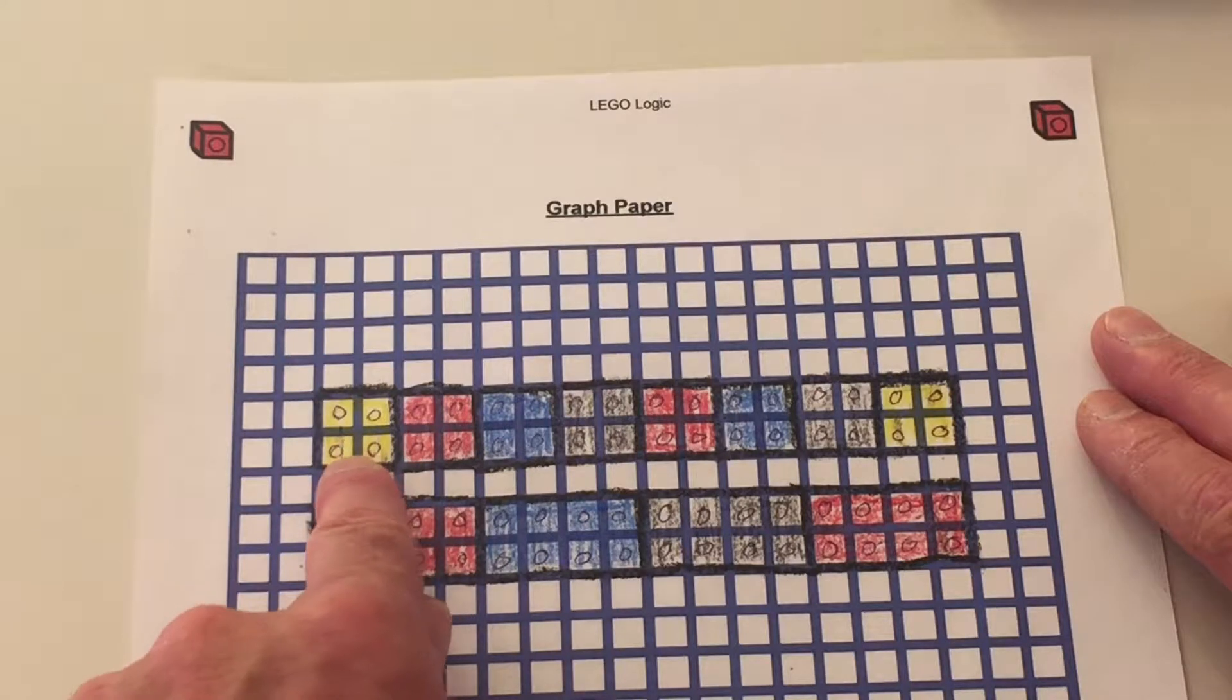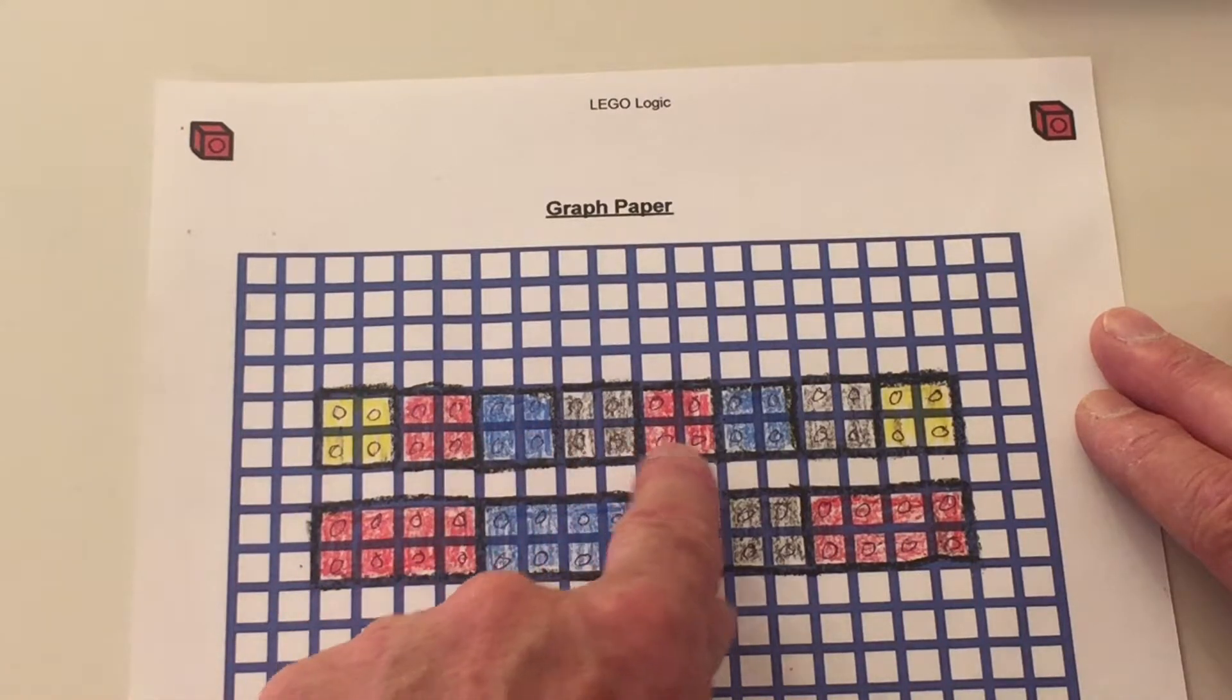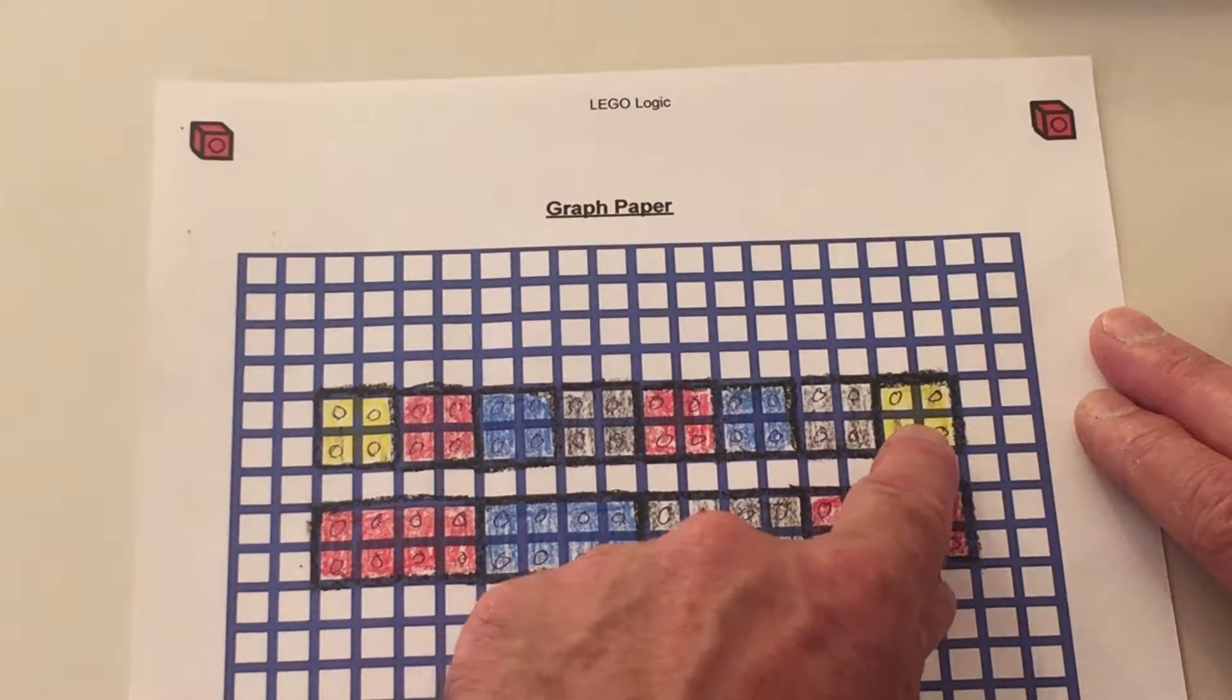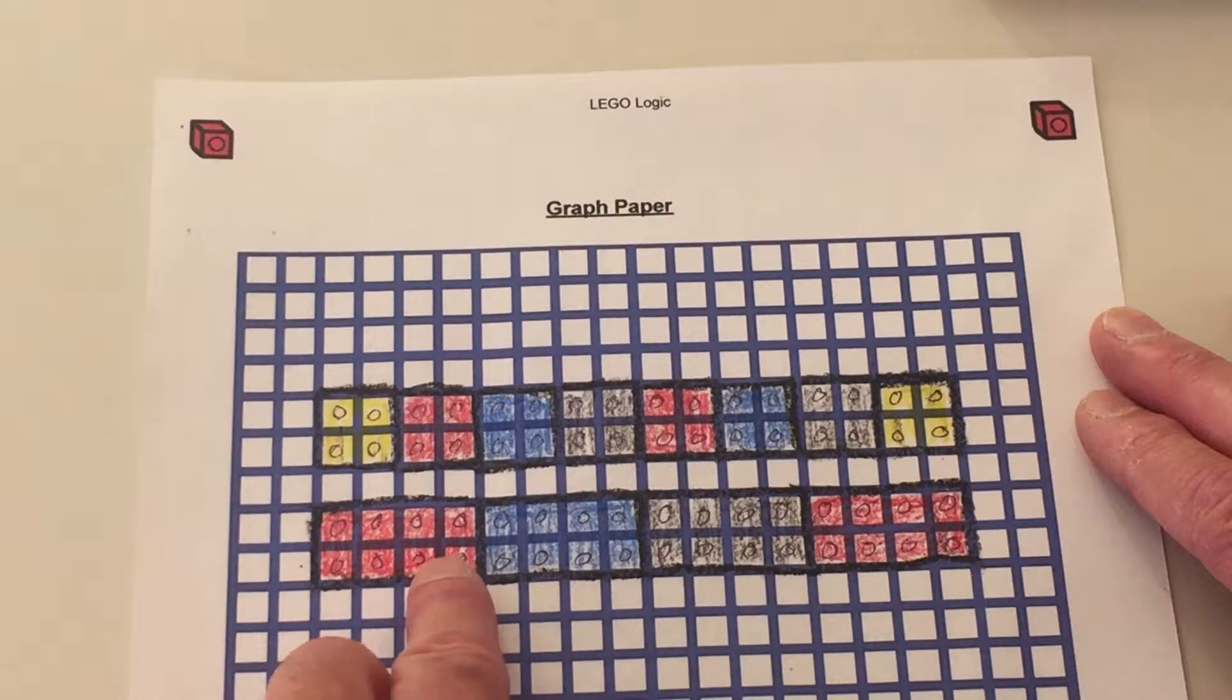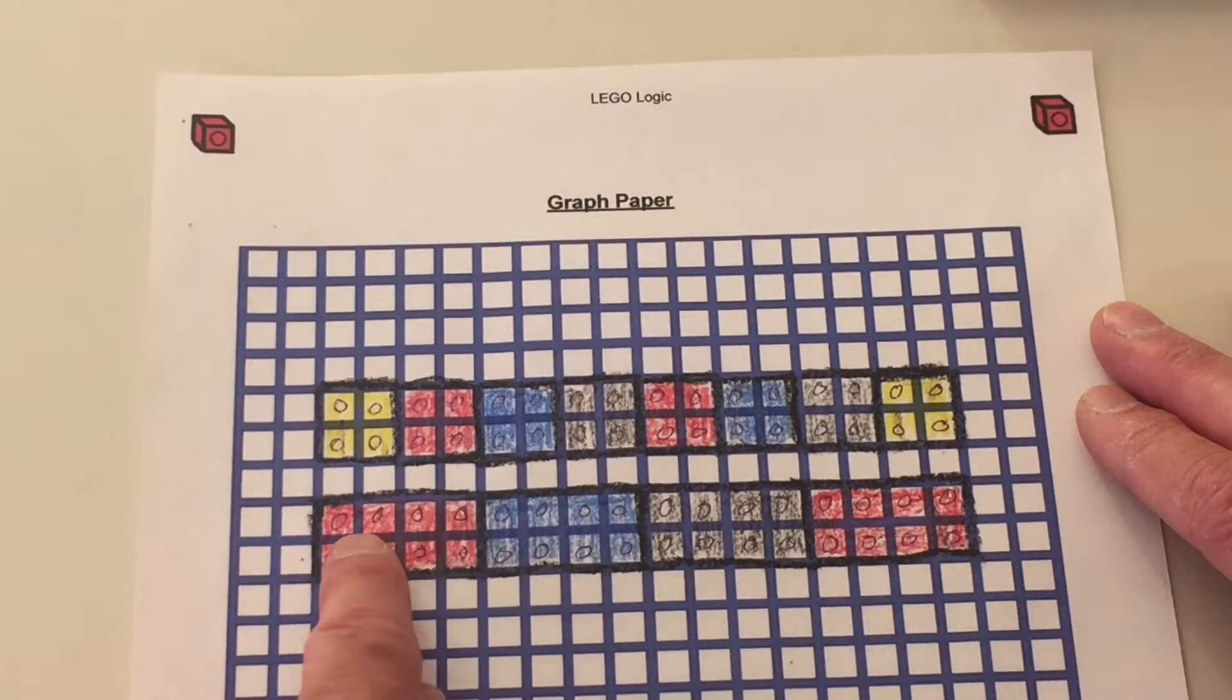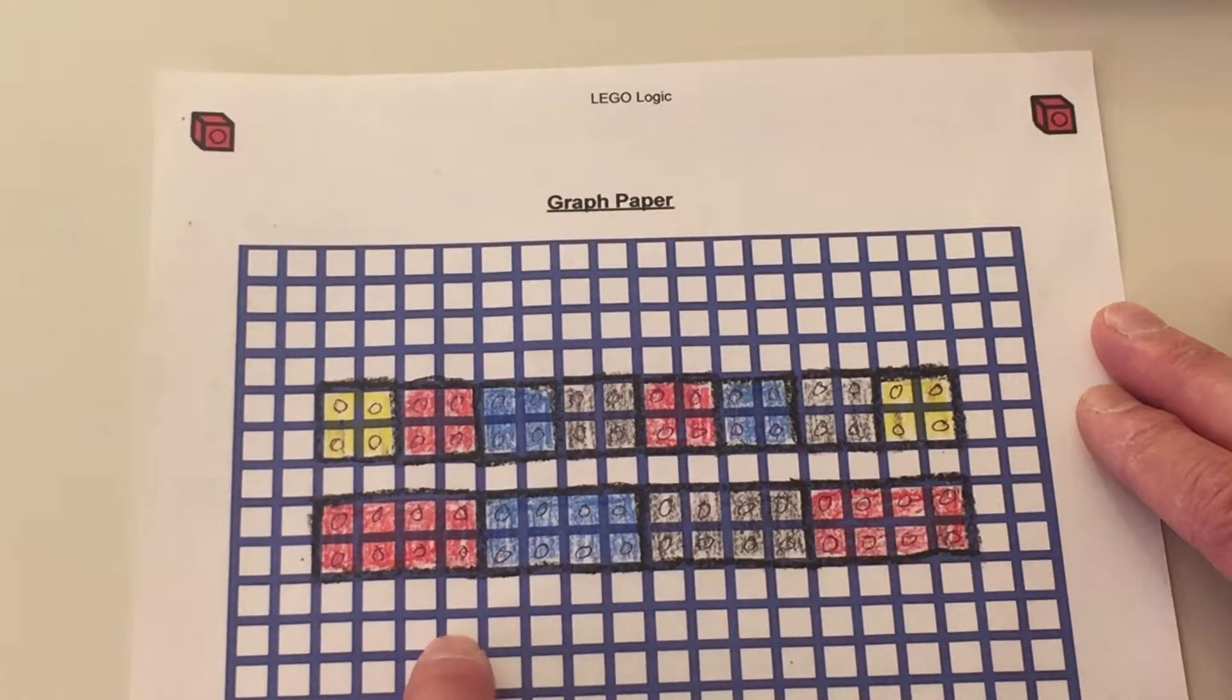So here's our first one that we did. Eight four blocks. One, two, three, four, five, six, seven, eight equals 32. And then we did four eight dot blocks. One, two, three, four eight dot blocks equals 32.